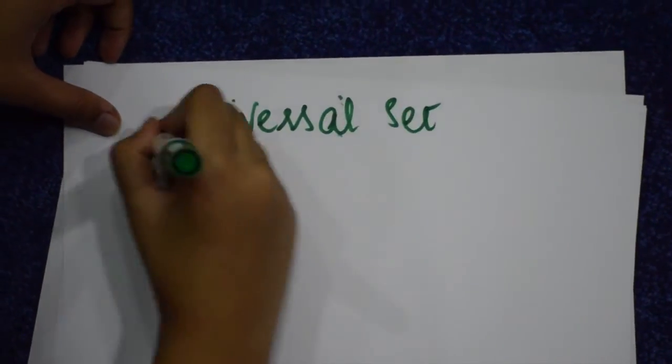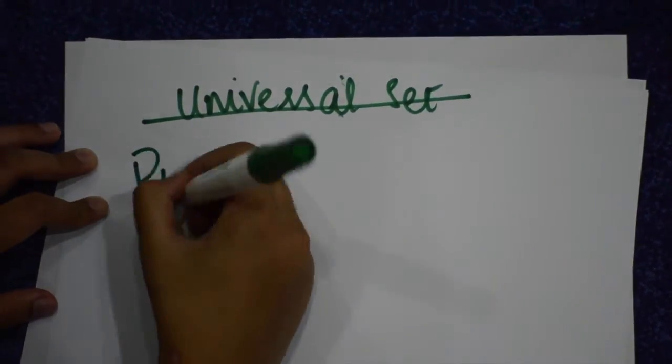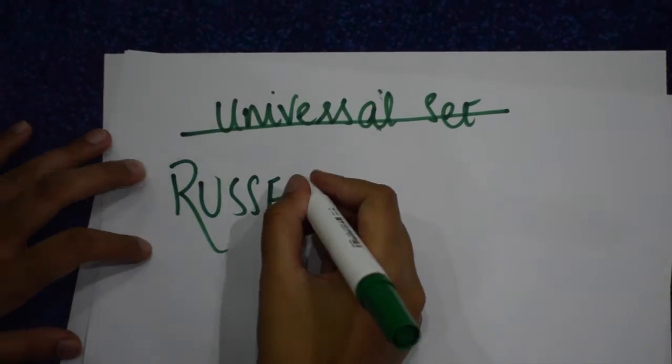In a nutshell, ZFC does not allow the existence of a universal set, thereby avoiding Russell's paradox.